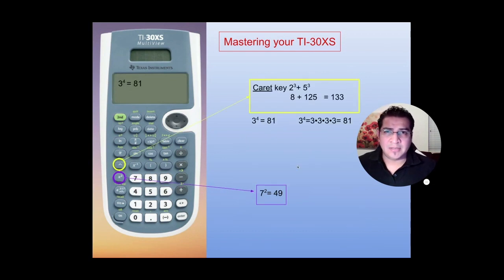If you have another exponent like 3 or 4, so I did 3 to the 4, you'll use the caret key. Here are some examples. So 3 to the 4 will be the same as 3 times 3 times 3 times 3, which will be 81.